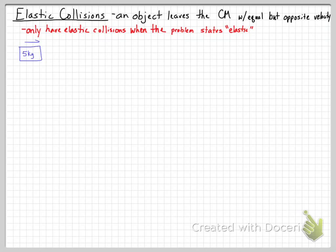So here we have a 5 kg object traveling at 10 meters per second, and a 5 kg object sitting at rest. The velocity of center of mass will end up being 5 meters per second. The reason it's 5 meters per second is because M1V1 — mass 5, velocity 10 — is 50, and M2V2 — mass 5, velocity 0 — is 0. So we have 50 divided by the total mass of 10 kg, which gives us 5 meters per second.